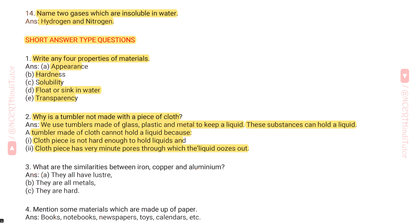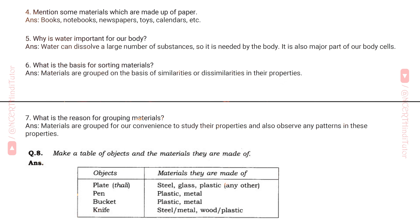Question 3: What are the similarities between iron, copper, and aluminium? Answer: a) They all have lustre, b) They are all metals, c) They are hard. Question 4: Mention some materials which are made up of paper.